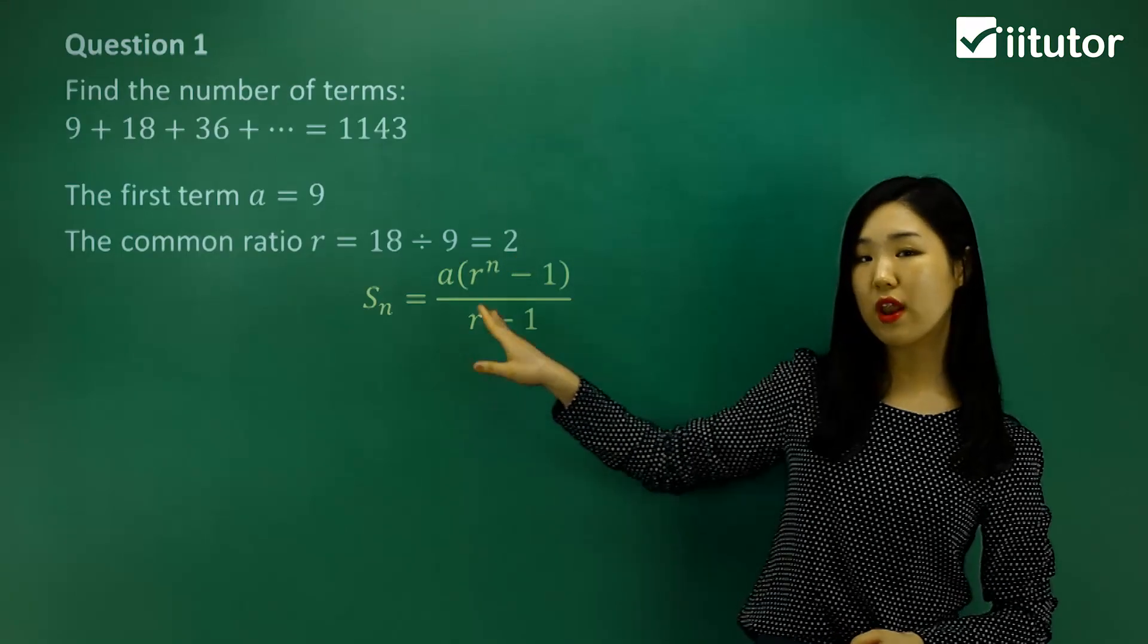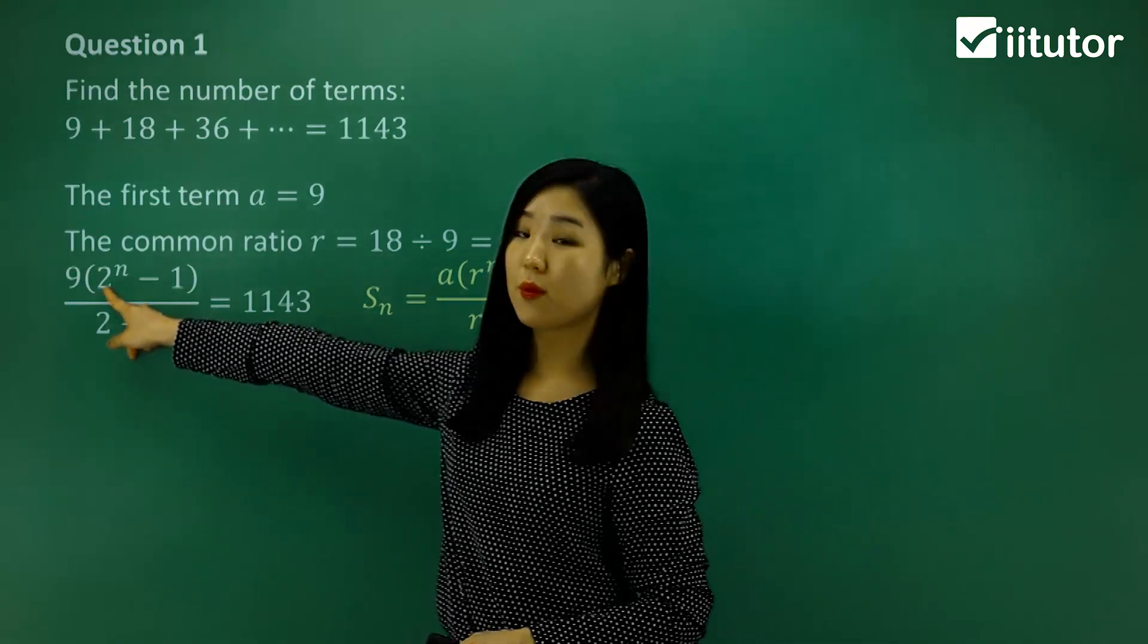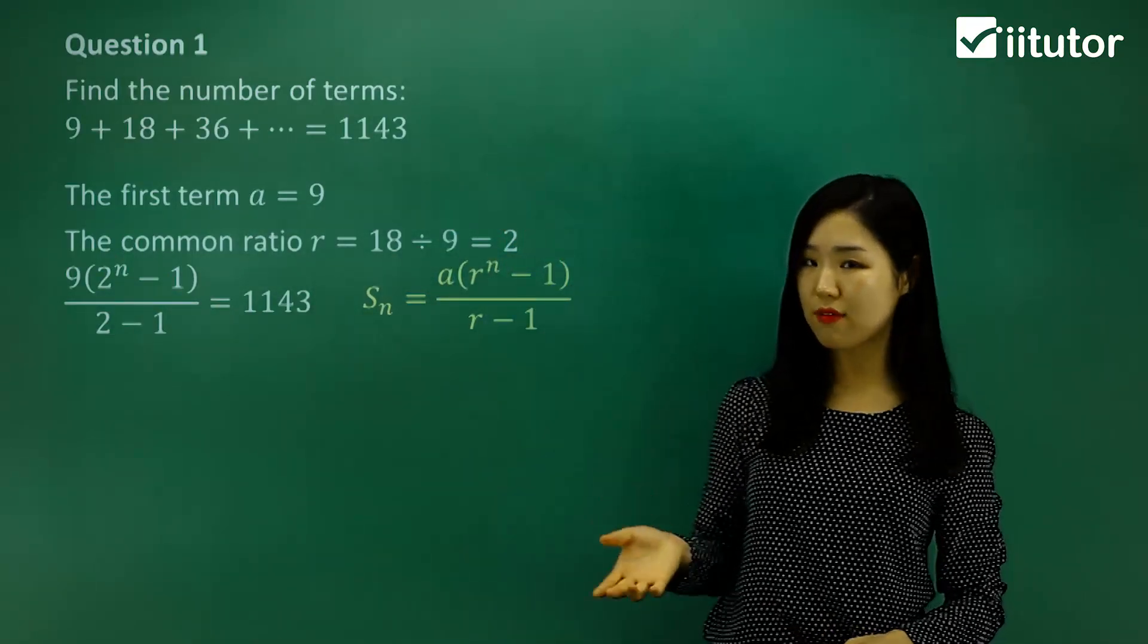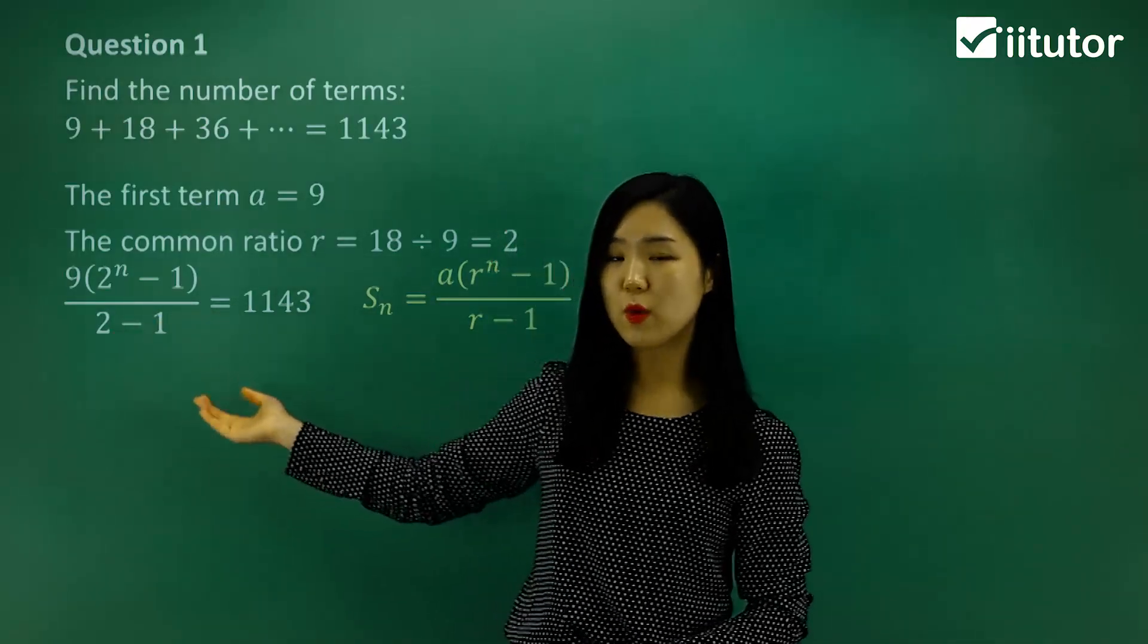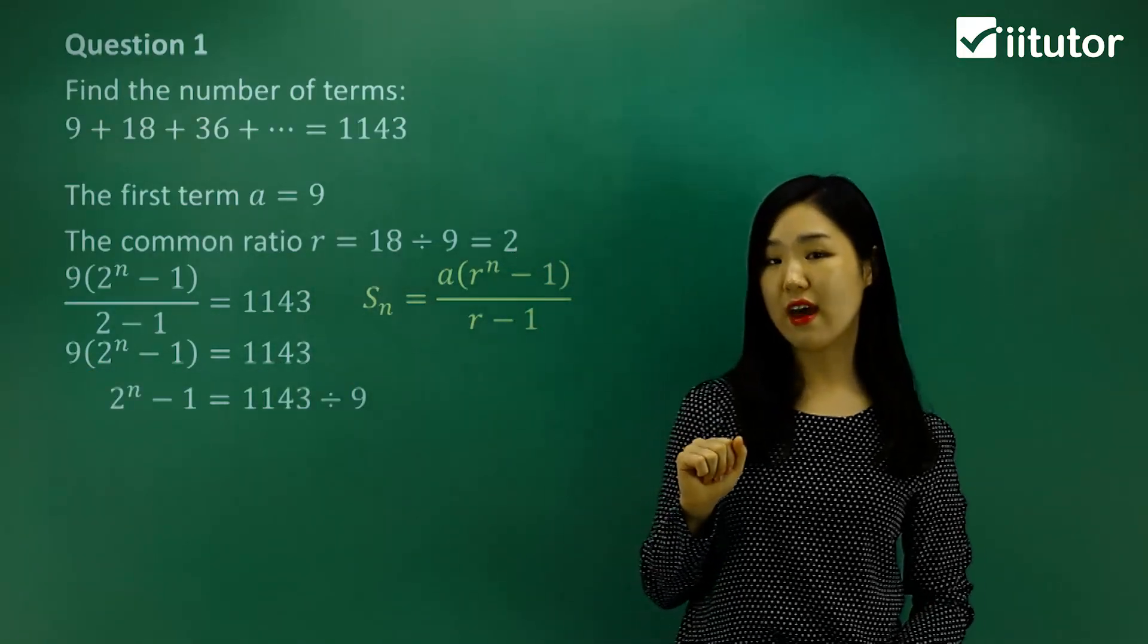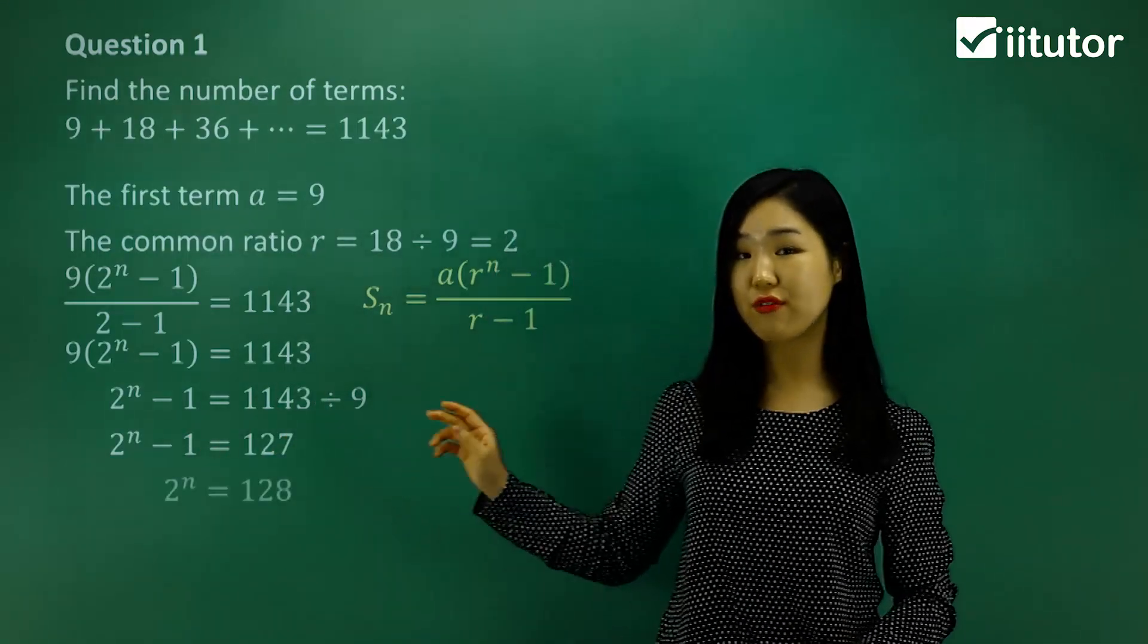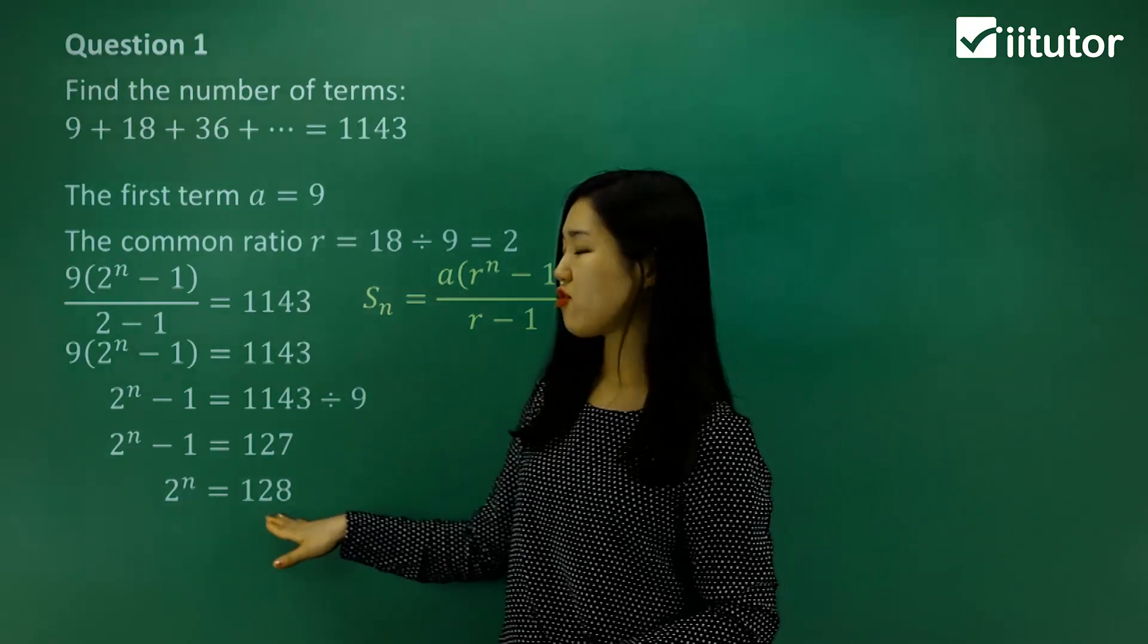So I'm going to use this one, I'm going to put all my values in. So see how a is 9, the common ratio is 2, and n we don't know. But we want the sum to be equal to 1143, so we have to find n. Now you can see that 2 minus 1 is just 1, so we don't have to write the denominator. And the 9 out the front, I'll just divide it over to the other side. 1143 divided by 9, that's 127. Now the negative 1, I'll add it over, so it becomes 128.